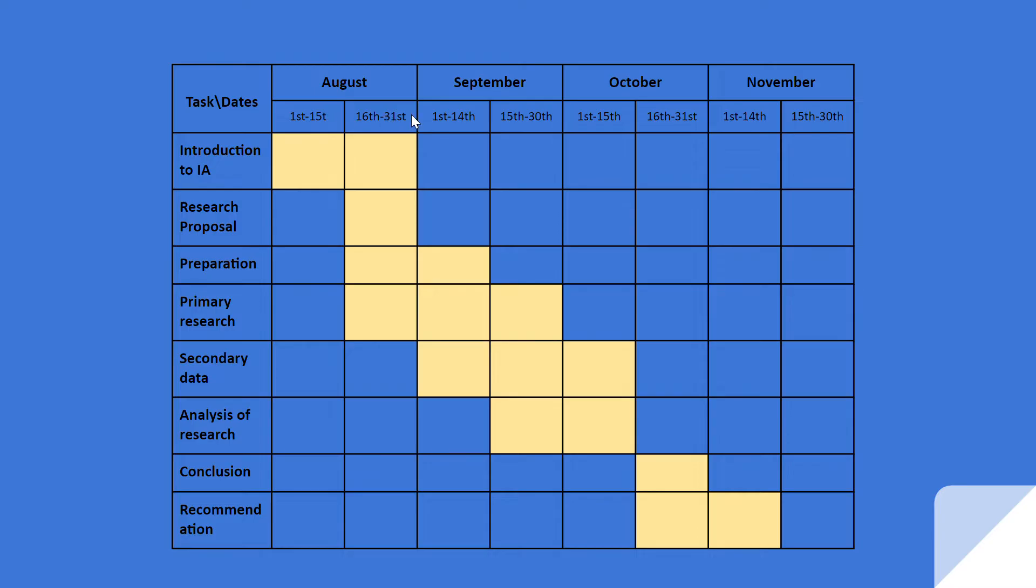Each box is 15 days. And then you'll see here how much time the colored boxes are, how much time it should take for the tasks to be completed. And what I meant before was sequential and parallel activities or tasks.